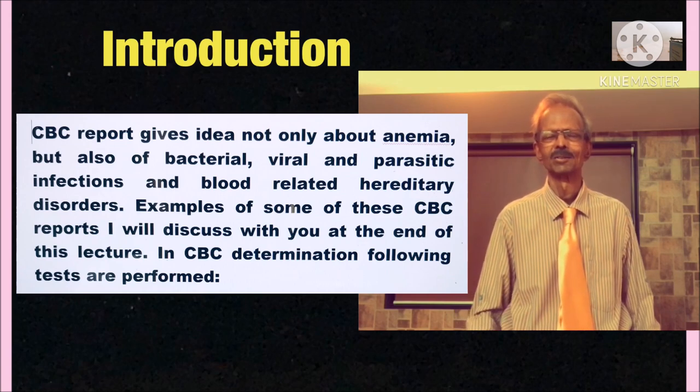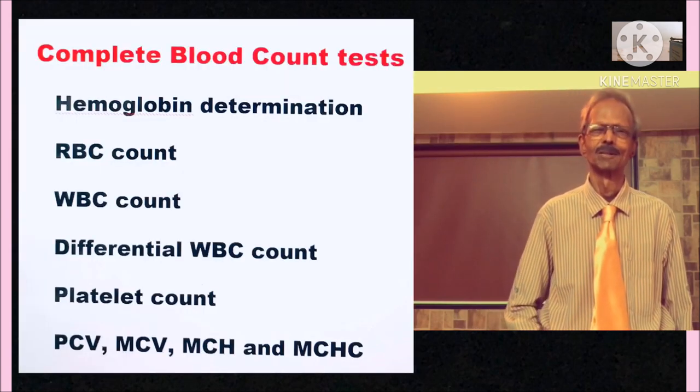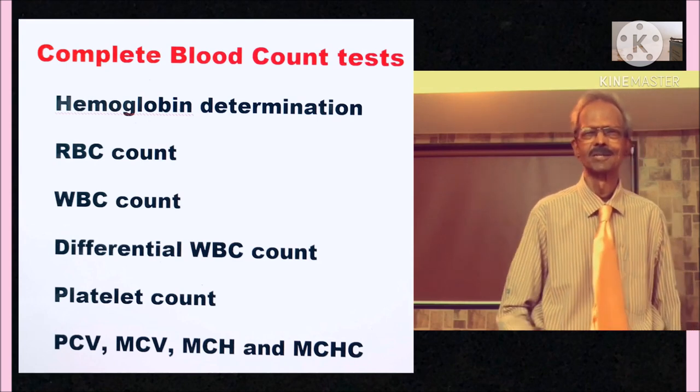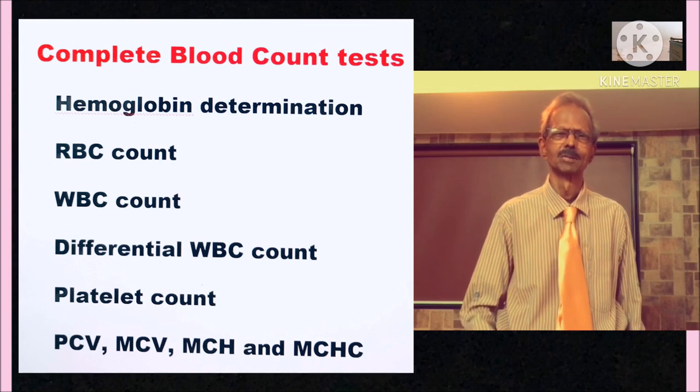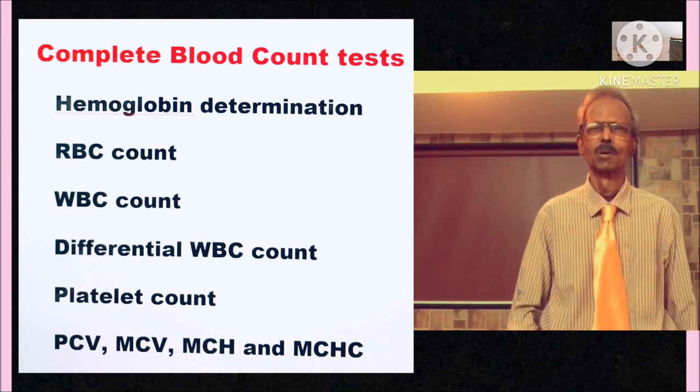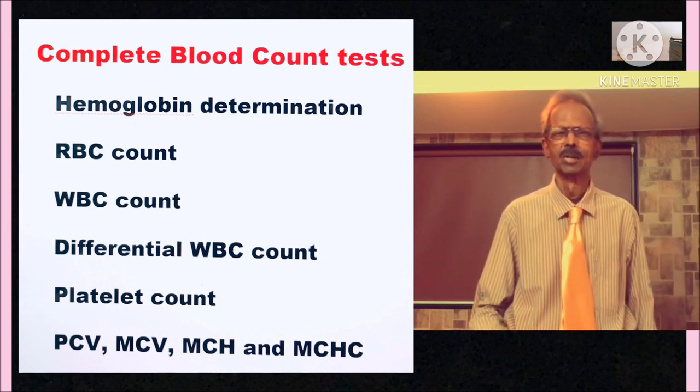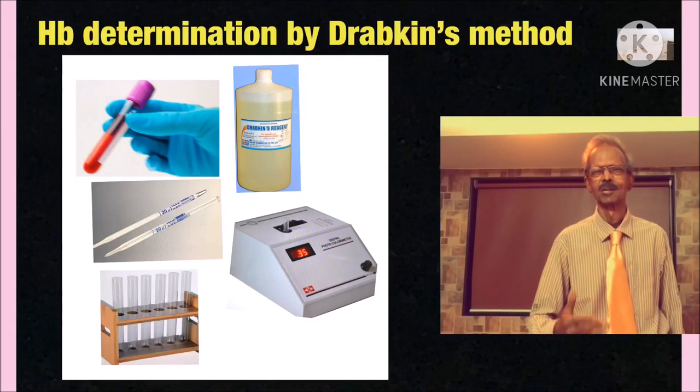In CBC determination, following tests are performed: Hemoglobin determination, RBC count, WBC count, Differential WBC count, Platelet count, PCV, MCV, MCH, and MCHC. Well, first hemoglobin determination by Drapkin's method.